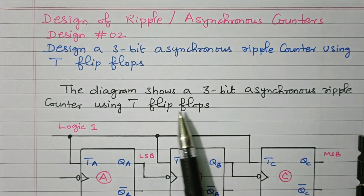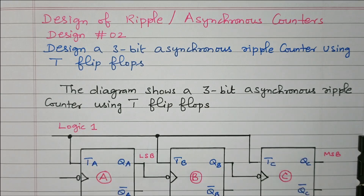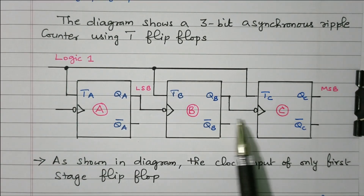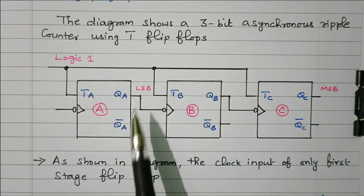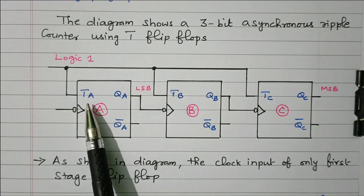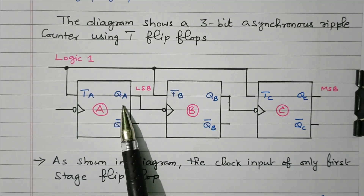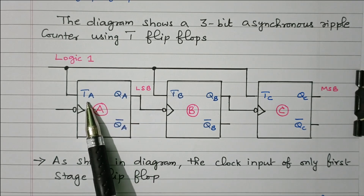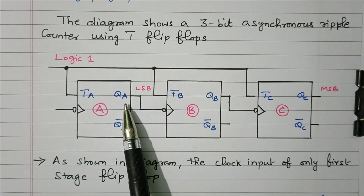The diagram shows the 3-bit asynchronous ripple counter using T flip-flops. We need 3 T flip-flops — A, B, and C — where C is the MSB and A is the LSB. The nature of the T flip-flop: if T input is 1, the output will toggle; if T input is 0, there is no change. In the present state and next state table, if T is 0 both states are the same; if T is 1 the state toggles: 0 becomes 1, and 1 becomes 0.